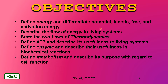The objectives of this chapter are to define energy and differentiate potential, kinetic, free, and activation energy. There's a lot going on here. We'll describe the flow of energy in living systems, state the two laws of thermodynamics, define ATP — that's adenosine triphosphate — and describe its usefulness to living systems. We'll also define enzyme and describe their usefulness in biochemical reactions, and define metabolism and describe its purpose with regard to cell function.